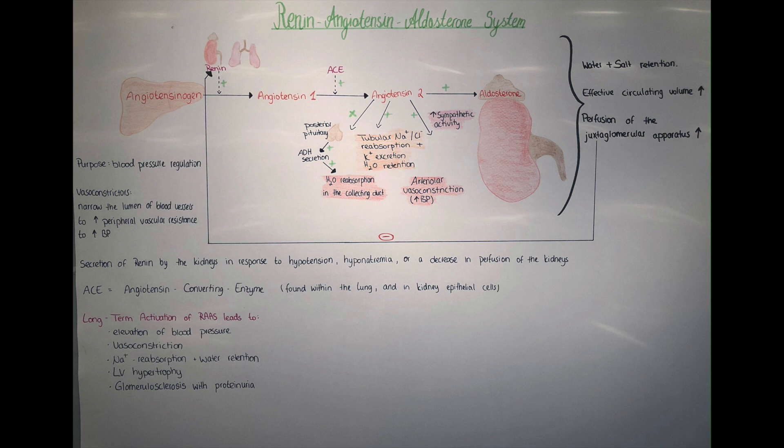Looking at this scheme, we can see just how important and powerful the effects of the RAAS system are. It is therefore no wonder that this is a target system in the treatment of cardiovascular disease, renal disease, and systemic hypertension. Long-term activation of the renin-angiotensin-aldosterone system can lead to elevation of blood pressure, vasoconstriction, sodium reabsorption and water retention, edema, left ventricular hypertrophy, and even glomerulosclerosis with proteinuria and chronic kidney failure.